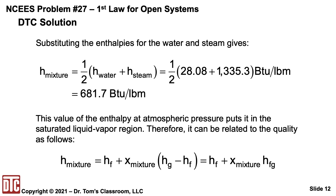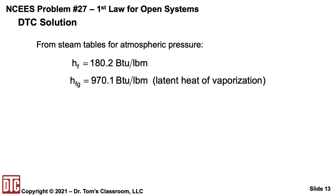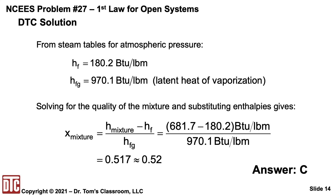This value for the enthalpy at atmospheric pressure places it in the saturated liquid-vapor region, so there is a quality associated with it. Using the standard definition: h equals hf plus x times hfg, where from the steam tables at atmospheric pressure hf is 180.2 and hfg is 970.1 BTUs per pound-mass — hfg being the latent heat of vaporization. Substituting into the expression for x-mixture gives (h-mixture minus hf) over hfg. The units are non-dimensional, and we get x-mixture of approximately 0.52, which is answer C.